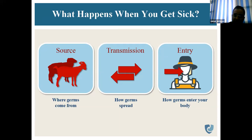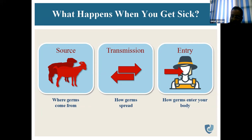The schematic diagram relates to the idea that we can avoid these diseases at three points — we can block zoonotic diseases at the source level, transmission level, and entry level.